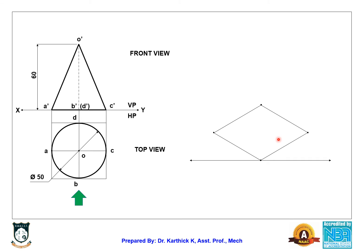Now we are going to construct the circle inside the box using the four-center method. Before starting, draw lines along both diagonals of the box in order to find the center. This gives us the center of the box.